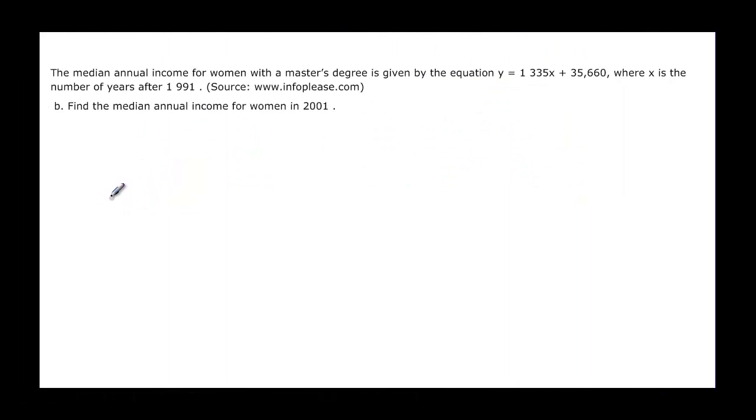Let's do the same problem but it's going to ask us to find the median annual income for women in 2001. Well we know that in 1991, that's year 0. So if we subtract 1991 from 2001, we find out that x is equal to 10.